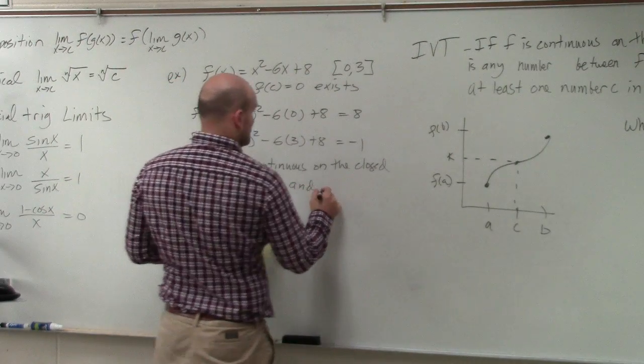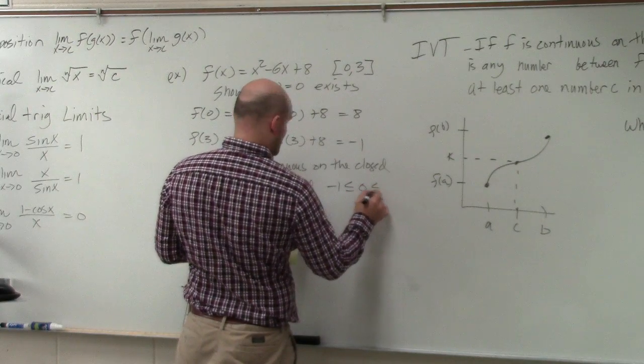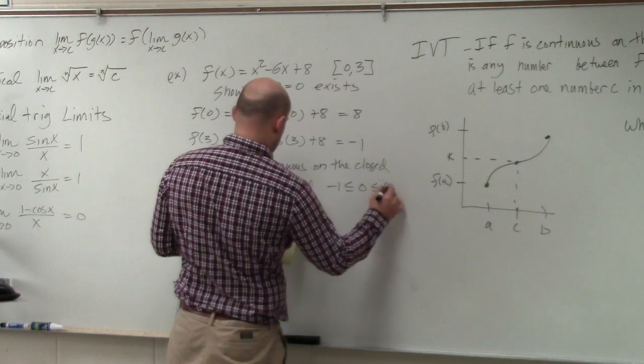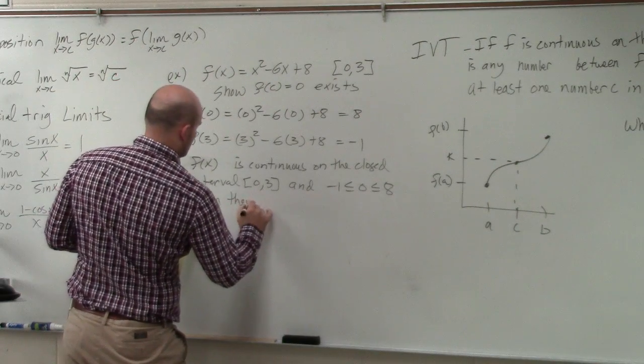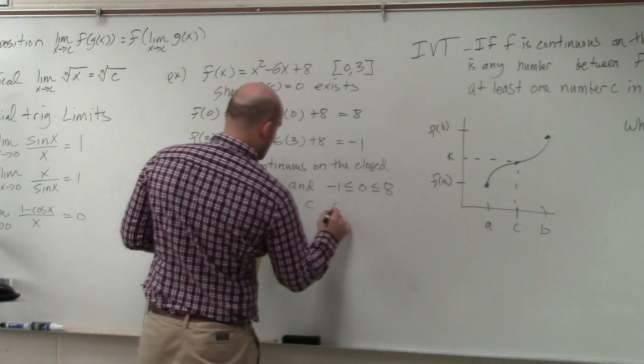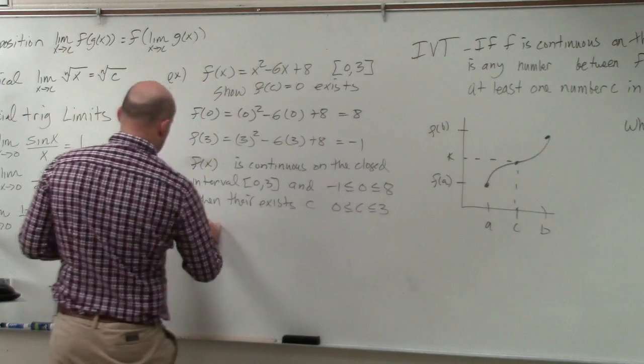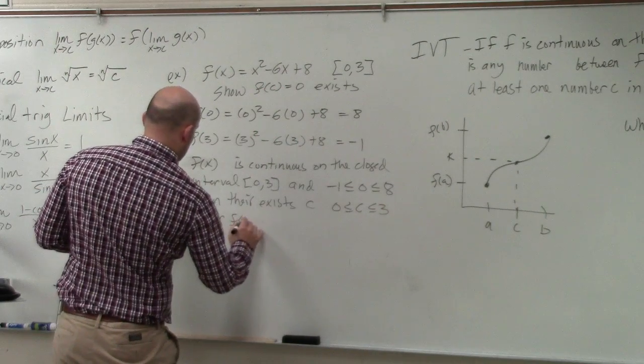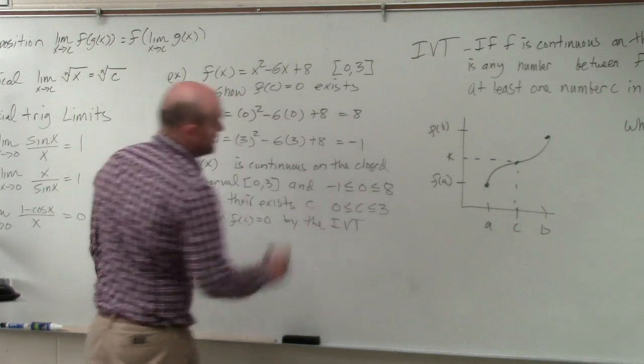And negative 1 is greater than or equal to 0, which is greater than or equal to 8. Then there exists c where 0 is less than or equal to c, which is less than or equal to 3, where f(c) equals 0 by the Intermediate Value Theorem.